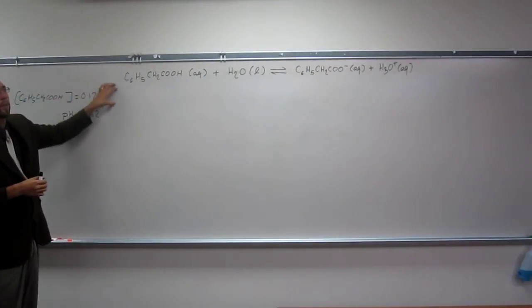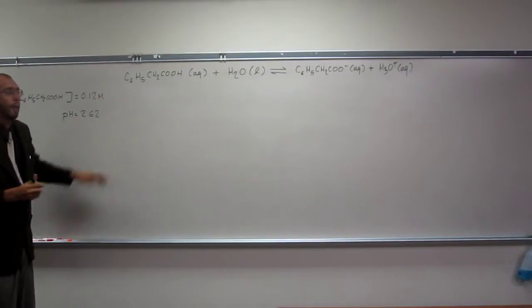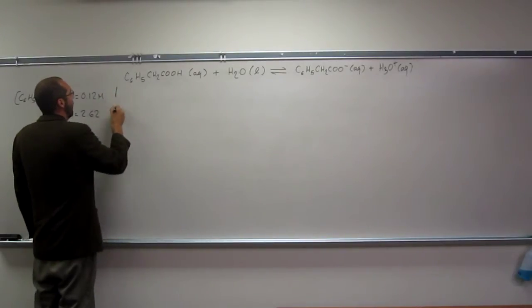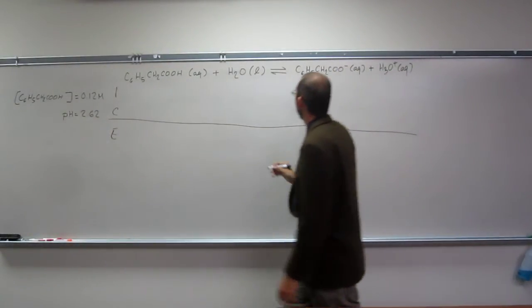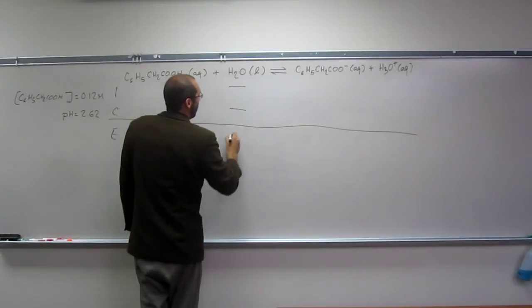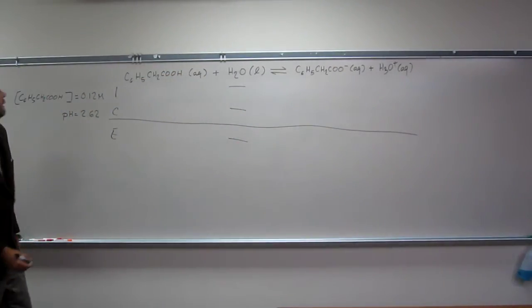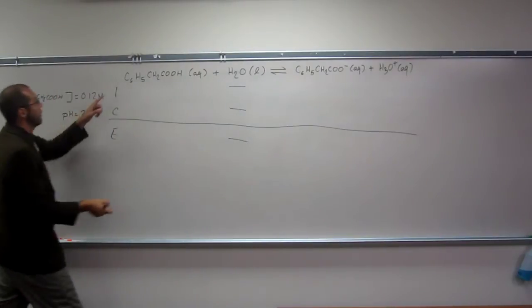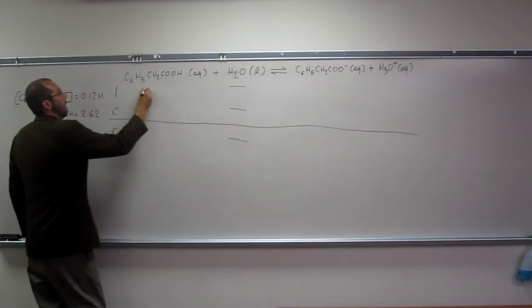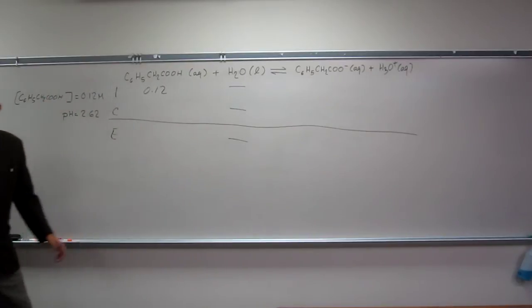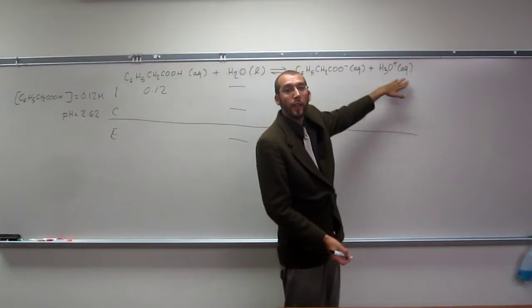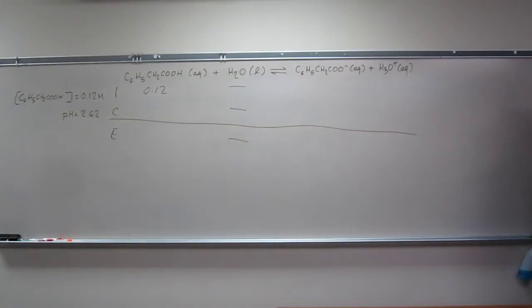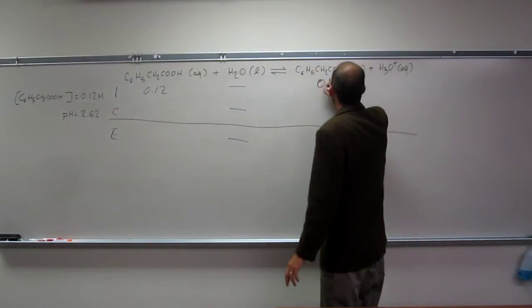So now what we can do is perform an ICE table here. I, C, E. And of course, in our ICE table, liquids we don't worry about. The initial concentration of our acid was 0.12, like that. The initial concentration of these was nothing. We're going to put 0 here and 0 here.